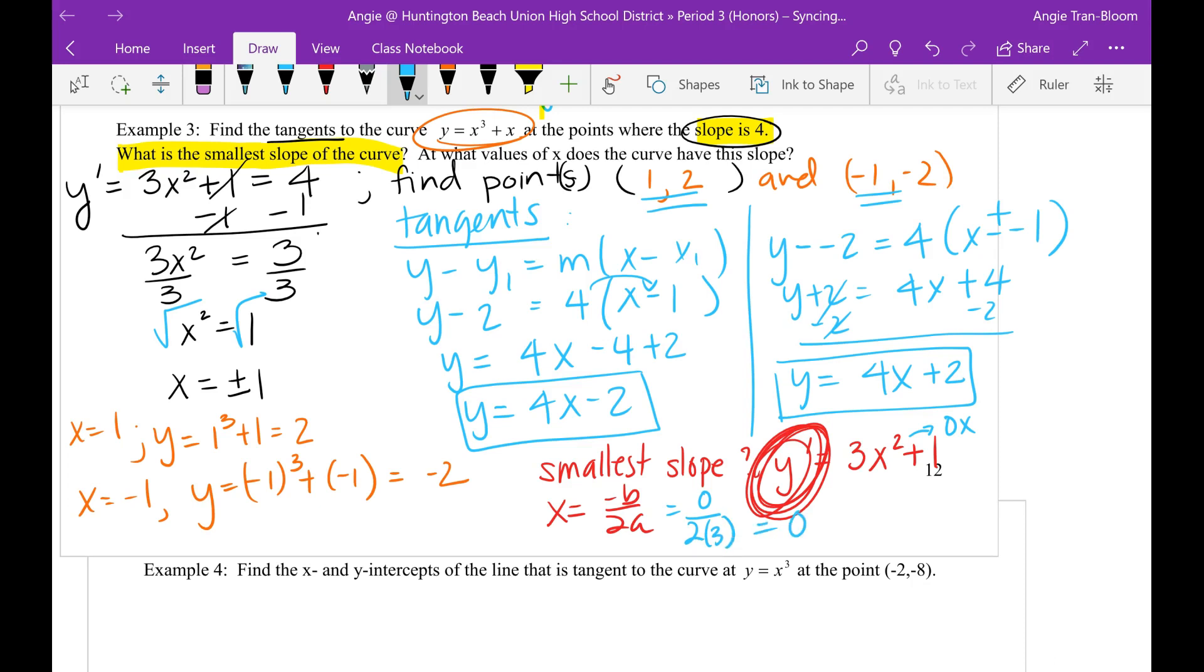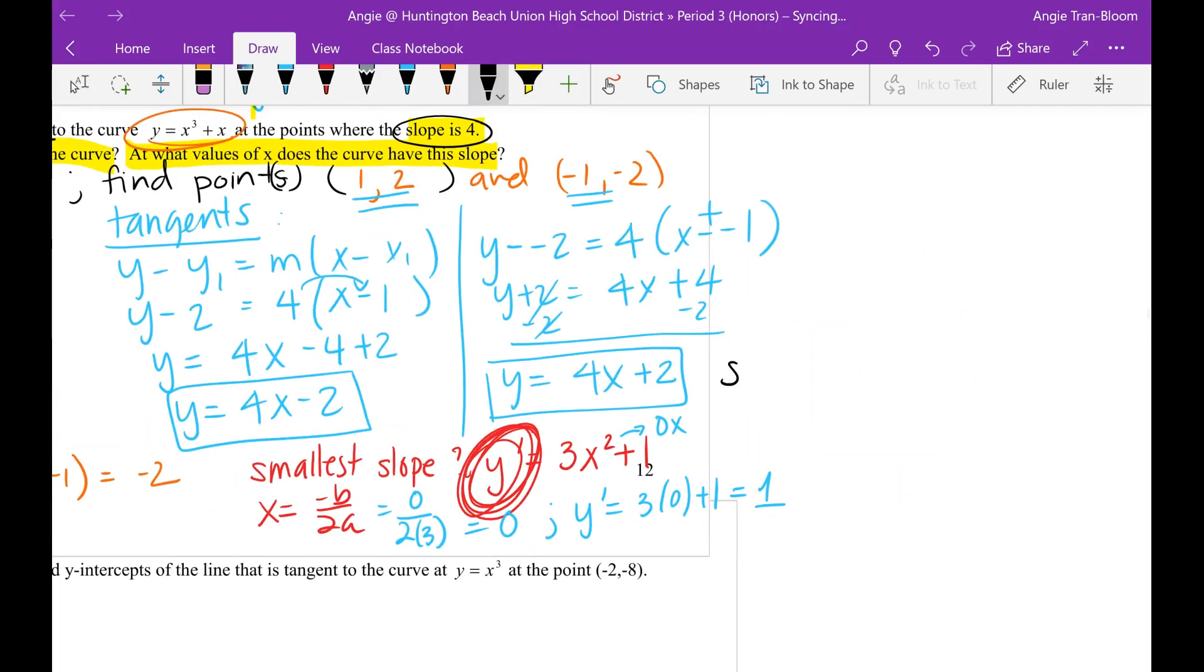What would my slope be at location x equals to 0? Well, I just have to plug it in. y prime is 3 times 0 plus 1. So the smallest slope is 1. So what I'm going to try to do is answer both of these questions in one sentence. Smallest slope is 1, and then the second part that says at what x value? At x equals to 0. So that is my final answer.